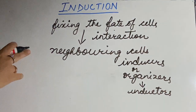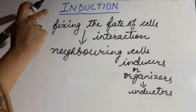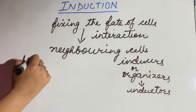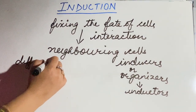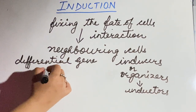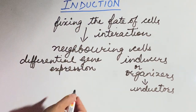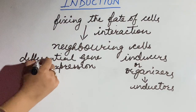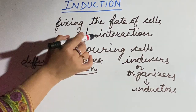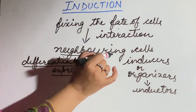Before we discussed cell differentiation — us mein bhi yehi tha ki the fate of the cells is fixed. How it is fixed? By differential gene expression. In differential gene expression, some of the genes are turned off and some genes remain functional. So different types of proteins are produced, which lead to differentiation. But here in induction, the fate of the cells is fixed by interaction with the neighboring cells.